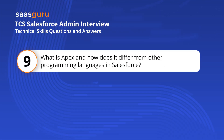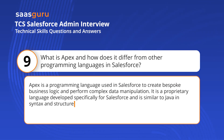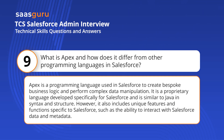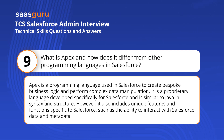What is Apex and how does it differ from other programming languages in Salesforce? Apex is a programming language used in Salesforce to create bespoke business logic and perform complex data manipulation. It is a proprietary language developed specifically for Salesforce and is similar to Java in syntax and structure. However, it also includes unique features specific to Salesforce, such as the ability to interact with Salesforce data and metadata.